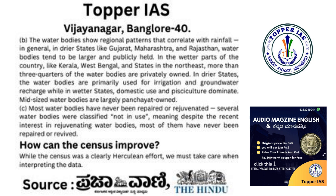The water bodies show regional patterns that correlate with rainfall in general. In drier states like Gujarat, Maharashtra, and Rajasthan, water bodies tend to be larger and publicly held. In the wetter parts of the country, like Kerala, West Bengal, and states in the northeast, more than three-quarters of the water bodies are privately owned. In drier states, water bodies are primarily used for irrigation and groundwater recharge, while in wetter states, domestic use and pisciculture dominate.